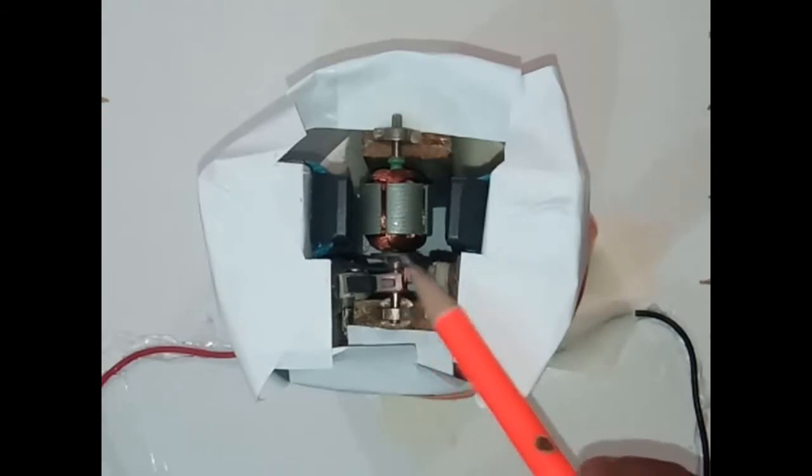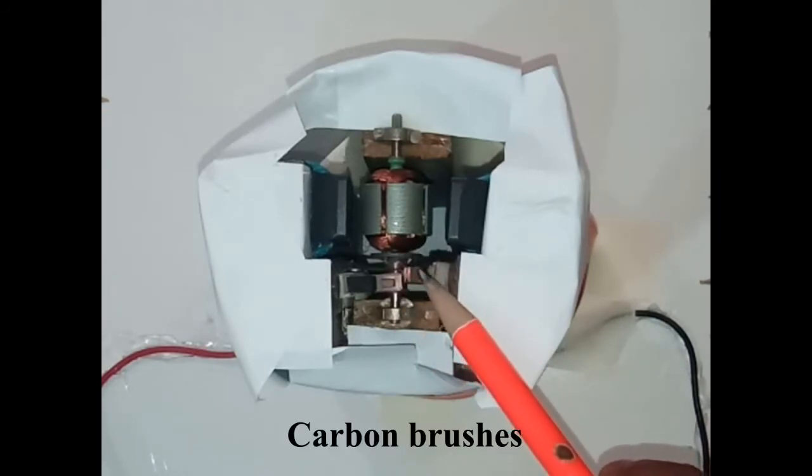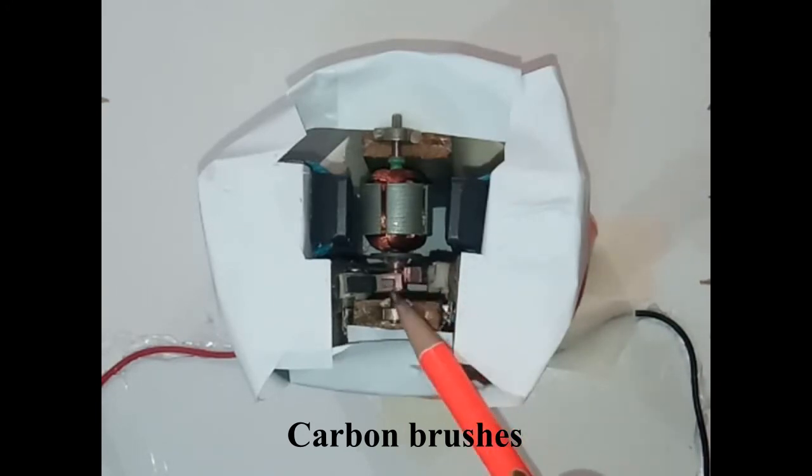The brushes are two contacts which rub against the split ring commutator and keep the coil connected to the battery. They are usually made of carbon, so it is sometimes called carbon brushes.